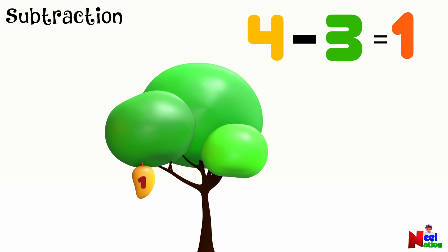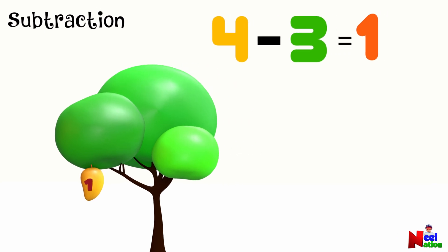That's right. Only one mango is left on the tree. When three mangoes fall off from four, we are left with just one. That's how subtraction works. Taking away and finding what's left.